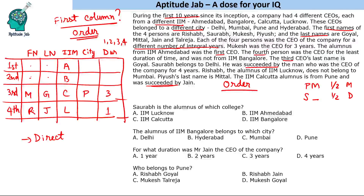Mukesh was CEO for three years, and Saurabh is succeeded by the person who was CEO for four years. Since Mukesh served three years and is the third CEO, Saurabh — who is succeeded by a four-year CEO — must be the second CEO serving two years, and Piyush Mittal is the first CEO for four years. The last name left is Talreja, so Saurabh Talreja is the first CEO.